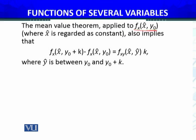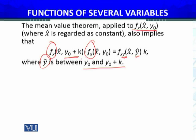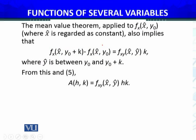Similarly, the Mean Value Theorem can be applied again: f_x(x̂, y₀+k) = f_xy(x̂, ŷ) where ŷ is between y₀ and y₀+k. Because treating x̂ as constant makes it a function of one variable in y, it is continuous on the open interval and its derivative with respect to y exists, so MVT applies.